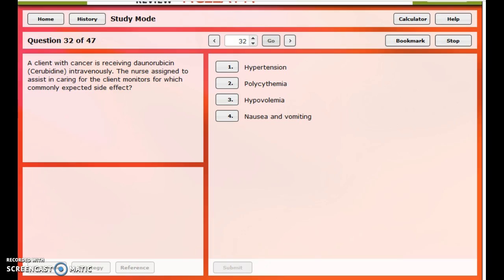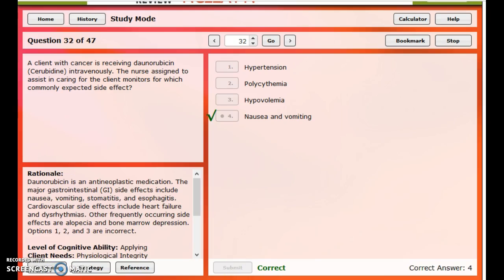We'll quickly look at some practice NCLEX questions that go with these. This person is taking daunarubicin or monitoring for commonly expected side effects. Really, we don't even need to know what specifically we're looking for. Commonly expected side effects. What have you seen on every single slide that I've done? Yeah, nausea, vomiting on any type of chemotherapy.